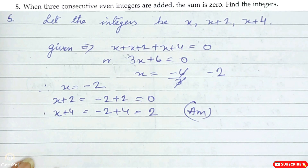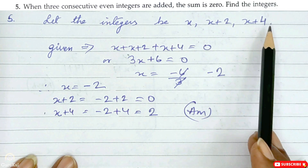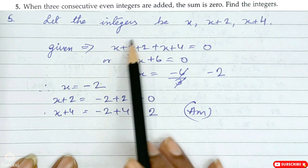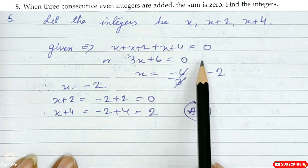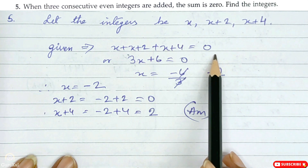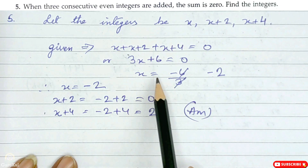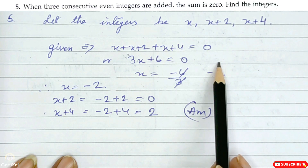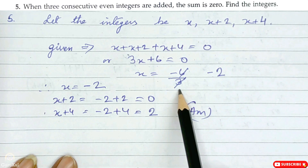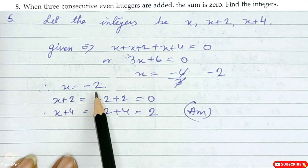Question number 5: When 3 consecutive even numbers are added, the sum is 0. Find the integers. Let the integers be x, x plus 2, and x plus 4. So x plus (x+2) plus (x+4) is equal to 0. And 3x plus 6 is equal to 0. So x is equal to minus 6/3 which is minus 2.